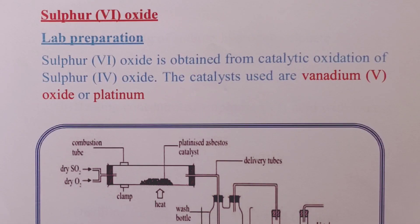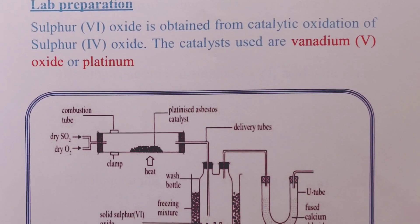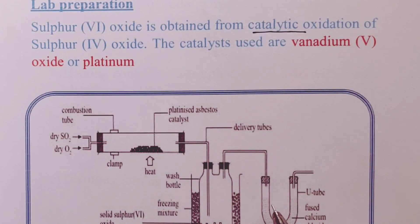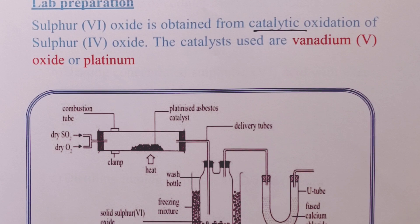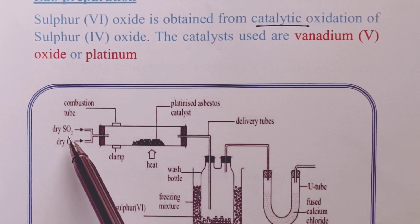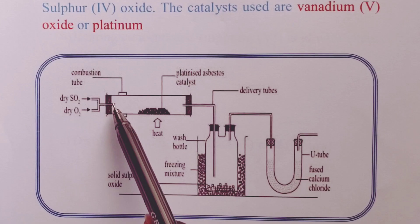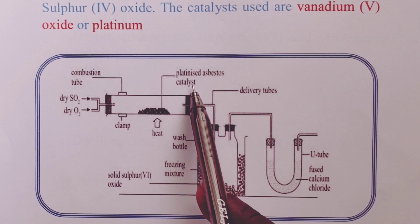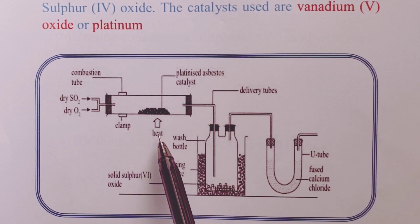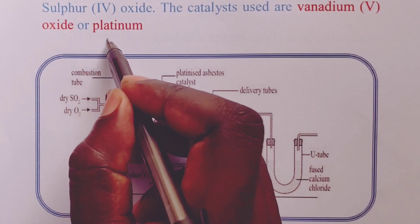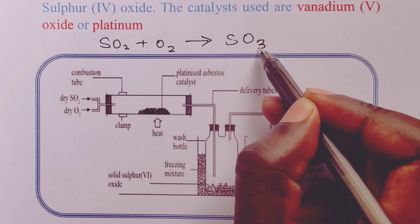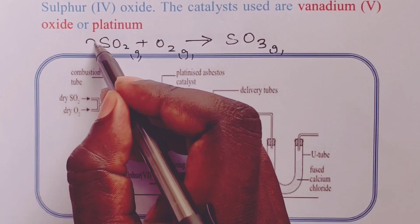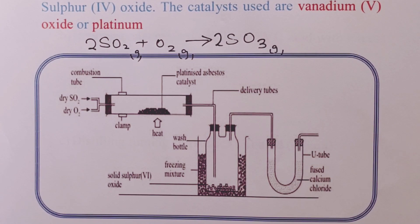We finally proceed to our last gas: sulfur trioxide (SO3). For lab preparation, sulfur trioxide is obtained from catalytic oxidation of sulfur dioxide. We oxidize sulfur dioxide in the presence of a catalyst — either vanadium(V) oxide or platinum. In the setup, dry sulfur dioxide and oxygen enter a combustion tube packed with platinum in the form of platinized asbestos. We heat it and the sulfur dioxide is oxidized in the presence of the catalyst to form sulfur trioxide. We balance with a 2 on sulfur dioxide and a 2 on sulfur trioxide.